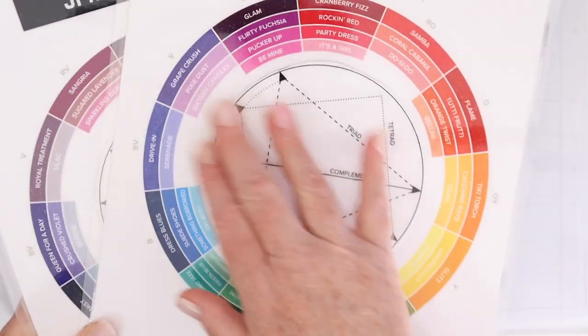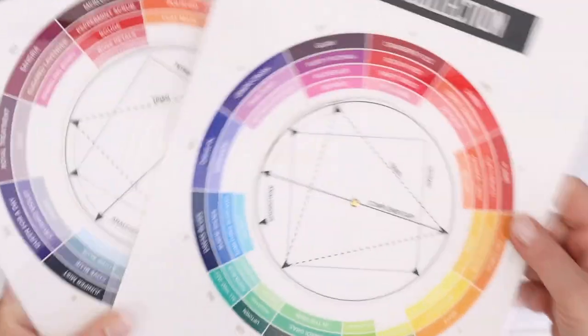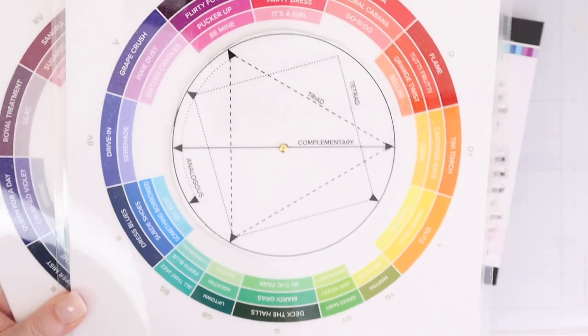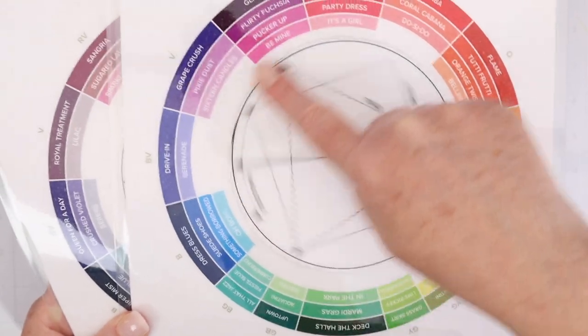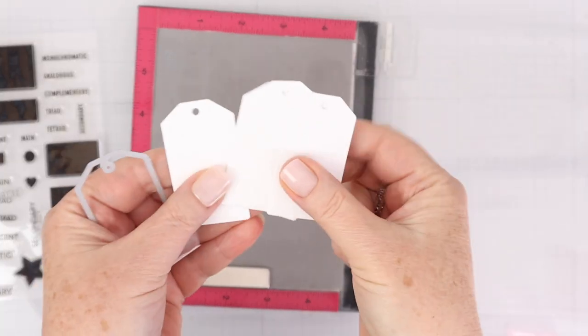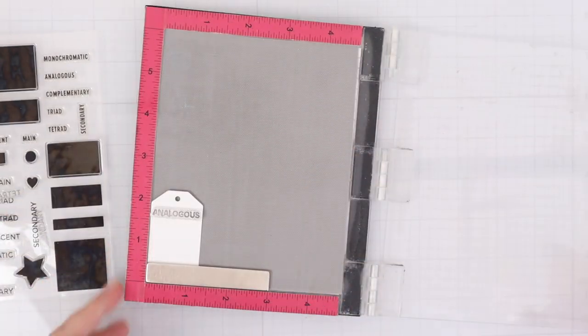Now that I know all the colors that I have, they're swatched out, they're blended out, I want to use the color wheels to create some fun color combinations that I wouldn't normally create myself. Usually we have a couple of color combinations in mind that we like to work with and we stick to those and don't really work outside of them. So I have some of the little tag dies cut out.